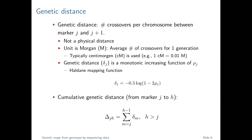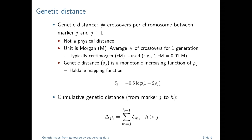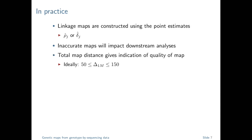As well as the genetic distance between adjacent markers, we're interested in the cumulative genetic distance between any two markers — capital Delta_jh — which is the sum of all adjacent distances between marker j and h. A lot of the time we focus on the total map distance: Delta_1M, the distance from the first to the last marker.